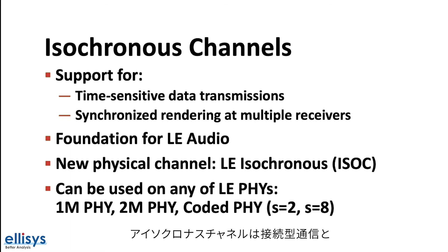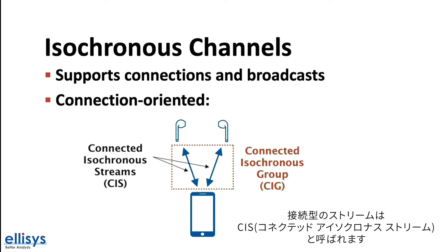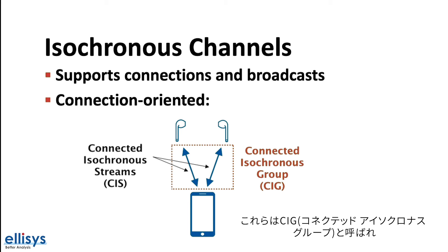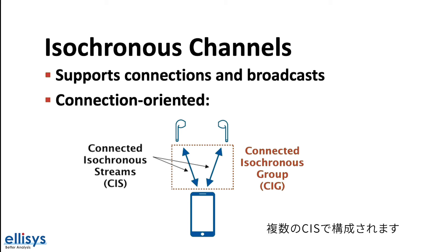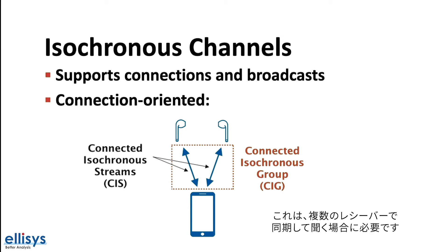Isochronous channels are supported for both connection-oriented and connectionless communication, such as broadcasts. In connection-oriented communication, each stream is referred to as a connected isochronous stream or CIS. When CISs need to be synchronized, such as ones sent to left and right earbuds, they are configured to be part of a single group referred to as a connected isochronous group or CIG. Streams that are part of the same CIG share timing reference data, which is necessary for synchronized stream rendering at multiple receivers.